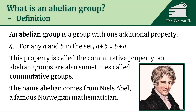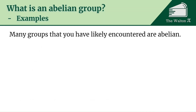The name Abelian comes from Niels Abel, pictured here — he's a famous Norwegian mathematician who did work in this area, so we named it after him. That's why some people capitalize Abelian, though I don't.